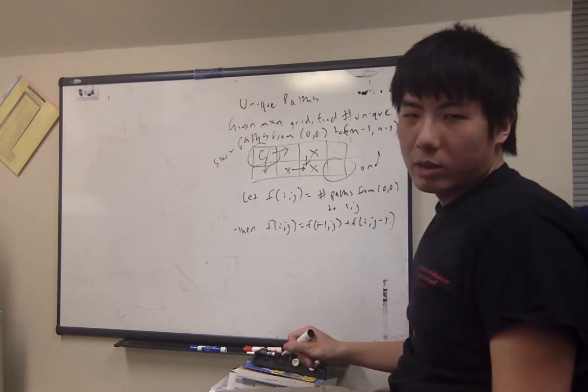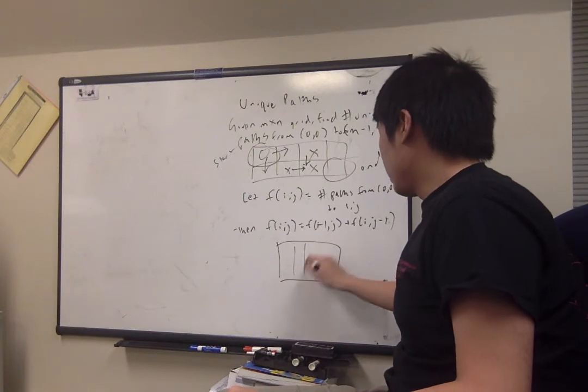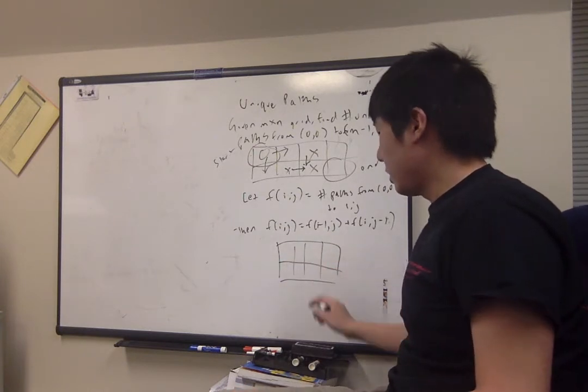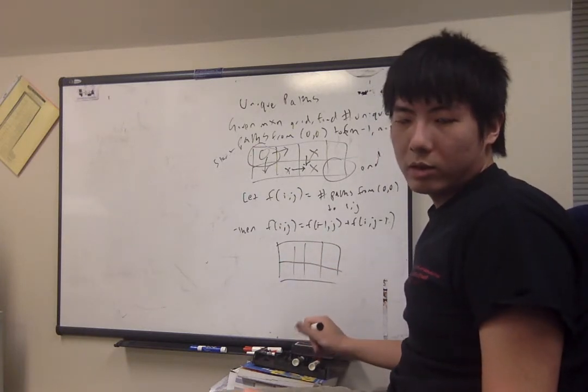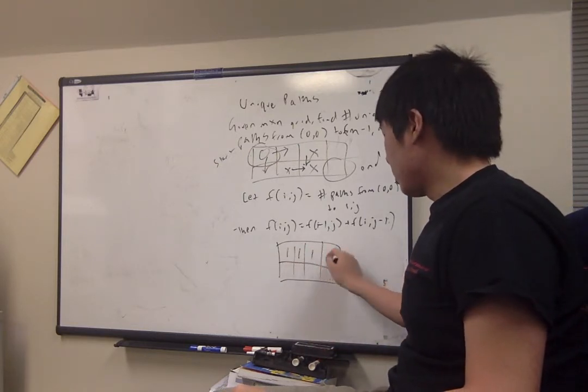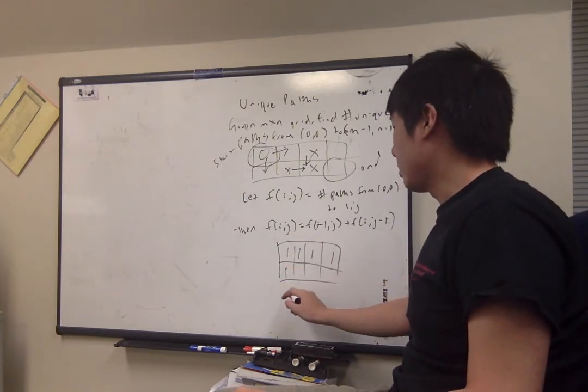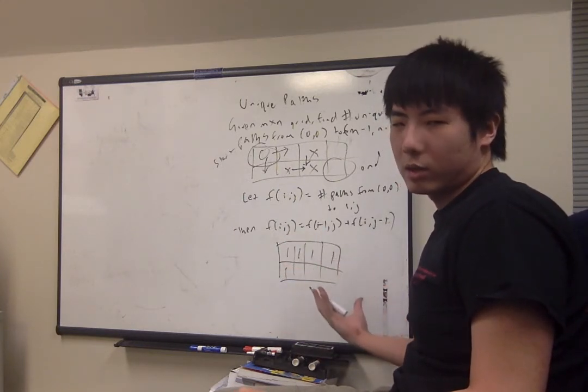And then we have some boundary conditions as well. So in particular, if you'll note that at the first row and first column of the grid, there's only one path to go straight to the right or straight down. And this is for any shape of grid.